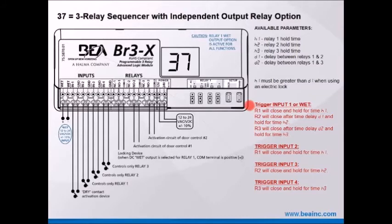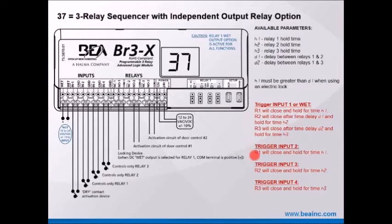Trigger input one or the wet input: relay one R1 will close and hold for H1. Relay two will close after delay D1 and hold for H2. R3 will close after D2 delay and hold for H3. If you trigger input two, only R1 will close and hold. Trigger input three, only R2 will close and hold. Trigger input four, only R3 will close and hold for its respective hold time.